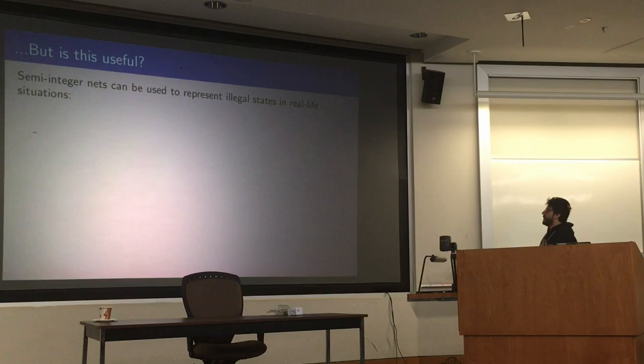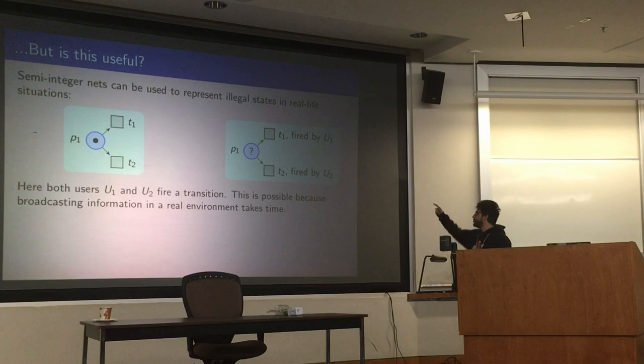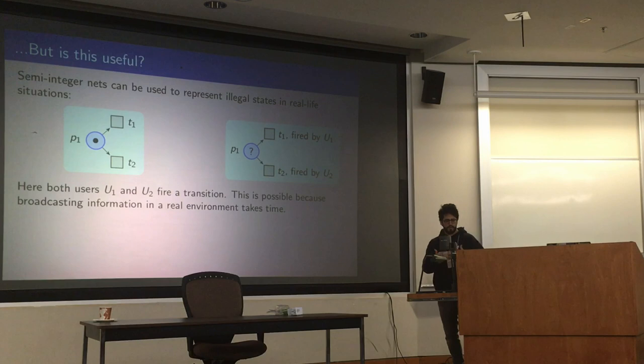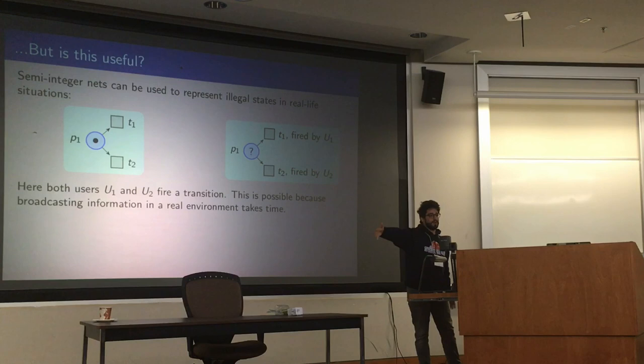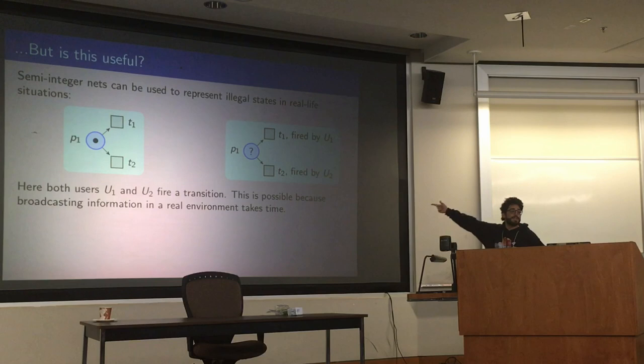Why is this useful? You can use this stuff to represent realized scenarios when you implement Petri nets. So now imagine that this Petri net on the left lives in a real network, and users can decide to fire transitions. Now the problem is that a user sees the net locally, decides to fire, and broadcasts this decision over the network. This thing can take time, and at the same time user 2 can do the same, because it still needs to get the message from user 1. And now the net is in an overall illegal state, because you don't have two tokens there.